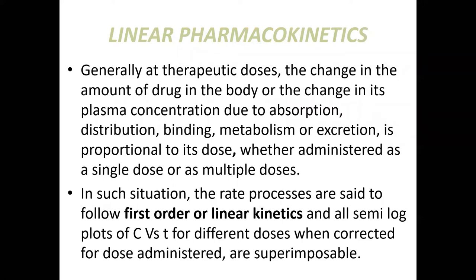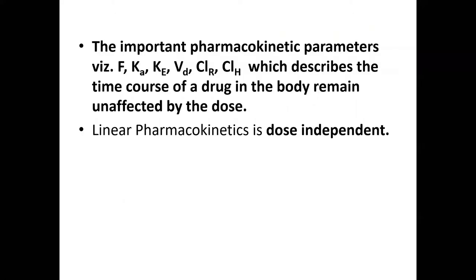In linear kinetics, when a dose of drug is given at therapeutic doses, the change in the amount of drug in the body — or the change in plasma concentration — due to absorption, distribution, metabolism, and excretion is proportional to the dose, whether administered as a single or multiple doses. Rate processes in linear kinetics follow first-order kinetics, and semilog plots of C versus T for different doses, when corrected for dose, are superimposable.